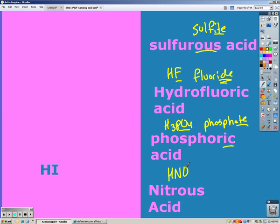HNO2 was nitrite, so ITE to OUS, and we have nitrous acid.